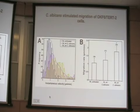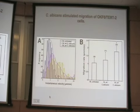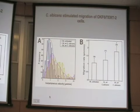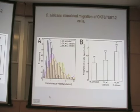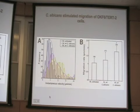We plotted instantaneous velocities and compared untreated cultures versus cultures treated with Candida albicans for three and six hours. We were able to see that untreated cultures and even the three-hour time point showed a normal distribution, whereas at the six-hour time point we picked up a bimodal distribution with two major peaks — one at around 1.5 microns and a second at about 2.5 microns.